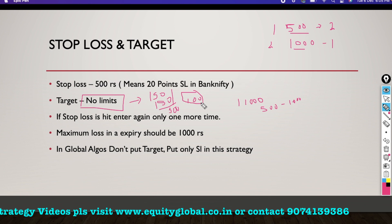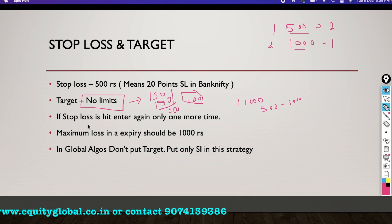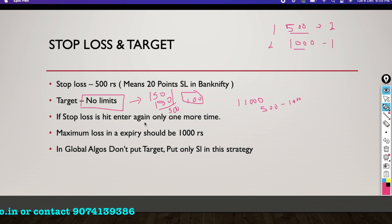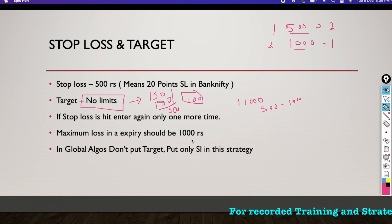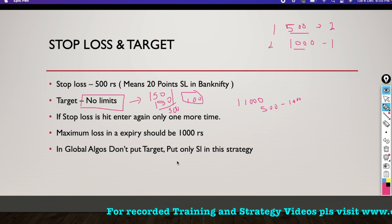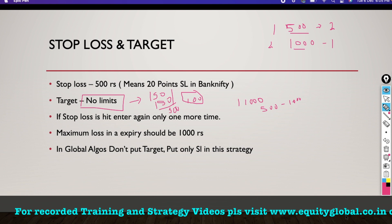If the stop loss is hit the first time, you re-enter for one more trade. The maximum risk in this strategy per day is 1000 rupees. I will show you how to set the stop loss and target in the platform.